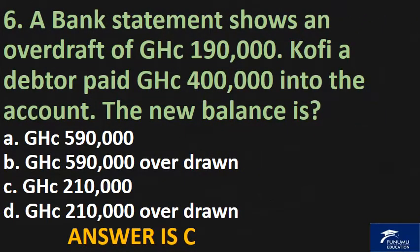A bank statement shows an overdraft of 190,000 Ghanaian cedis. A debtor paid 400,000 Ghanaian cedis into the account. The new balance is: A. 590,000 Ghanaian cedis, B. 90,000 Ghanaian cedis overdrawn, C. 210,000 Ghanaian cedis, D. 210,000 Ghanaian cedis overdrawn. The answer is C.